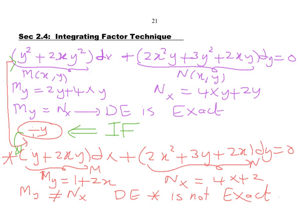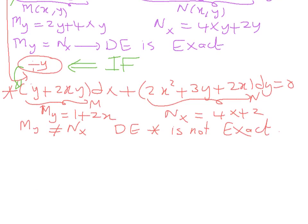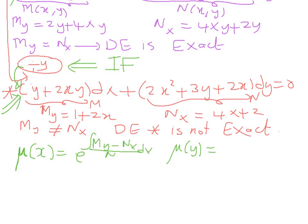The reason we call it an integrating factor is that if we multiply it back into the differential equation, we get an exact equation that can be integrated and solved. To find an integrating factor, denote it as μ. If μ is a function of x only, use the formula (M_y − N_x)/N dx. If it is a function of y only, use (N_x − M_y)/M dy. If μ depends on both x and y, it cannot be found by ordinary methods.